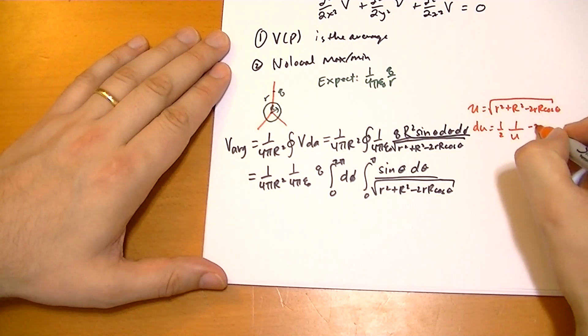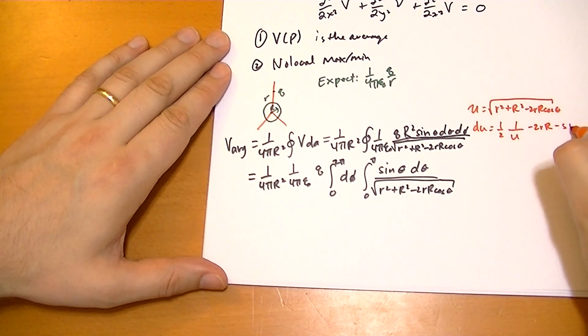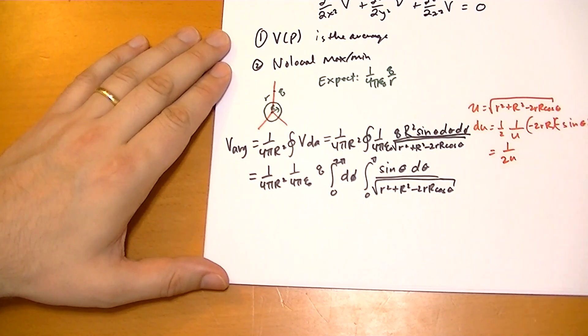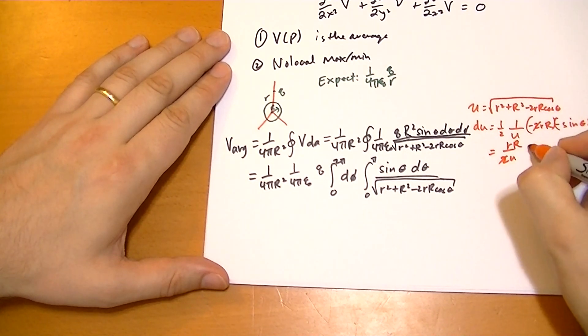This is multiplied d theta. So those negative signs do cancel, so we have 1 over 2u. This cancels, that cancels. So we get rR sine theta d theta.